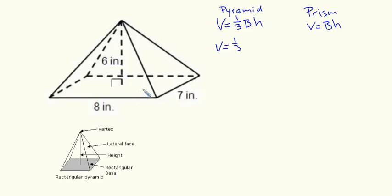Our base is a rectangle, so we have length times width, or 8 times 7, and then we're going to multiply the area of the base times the height of the pyramid, which is 6 inches.